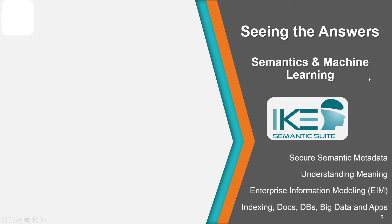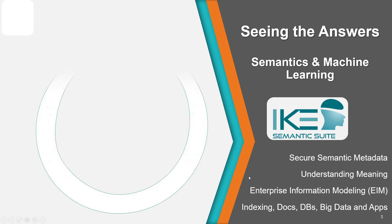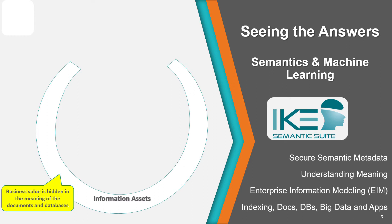This is an explanation of Ike's semantic capabilities associated with structured and unstructured information. In any given enterprise, you have any number of information assets that contain the business value, and each of those information assets, whether structured or unstructured, is based on numbers and letters and words and sentences. Those contain the meaning necessary to provide business value.